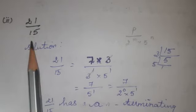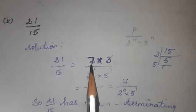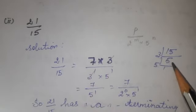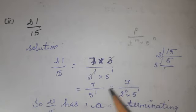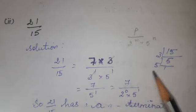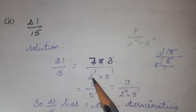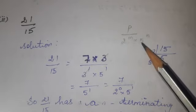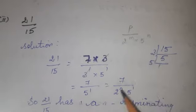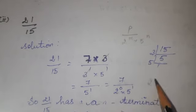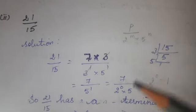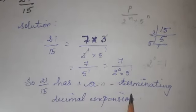Second question: 21 divided by 15. Factorizing the numerator: 21 = 7 × 3. Factorizing the denominator: 15 = 3 power 1 × 5 power 1. In the numerator 3 is present; in the denominator 3 is present, so 3 and 3 get cancelled. You will get 7 divided by 5 power 1. The 2 power is missing, so we write 2 power 0 into 5 power 1. Now you get the required format. Therefore, 21 divided by 15 has a terminating decimal expansion.